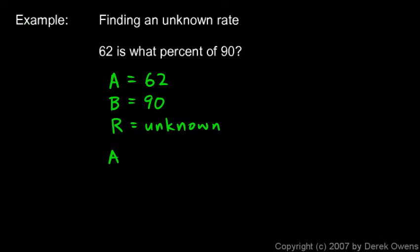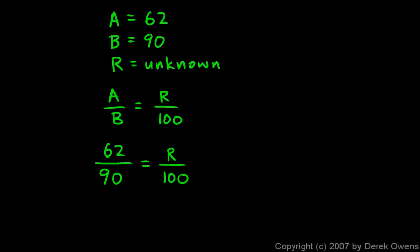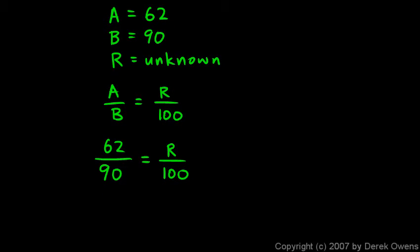We set up the percent proportion: a/b = r/100. Plugging in the numbers we know: a is 62, b is 90, and r is the unknown variable over 100. So we have 62/90 = r/100.